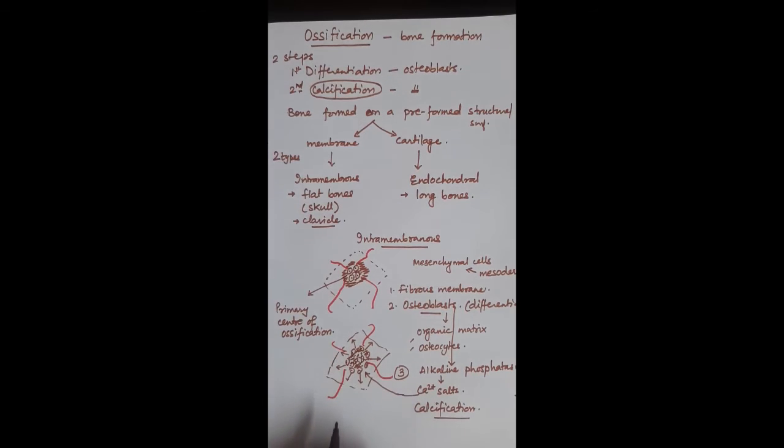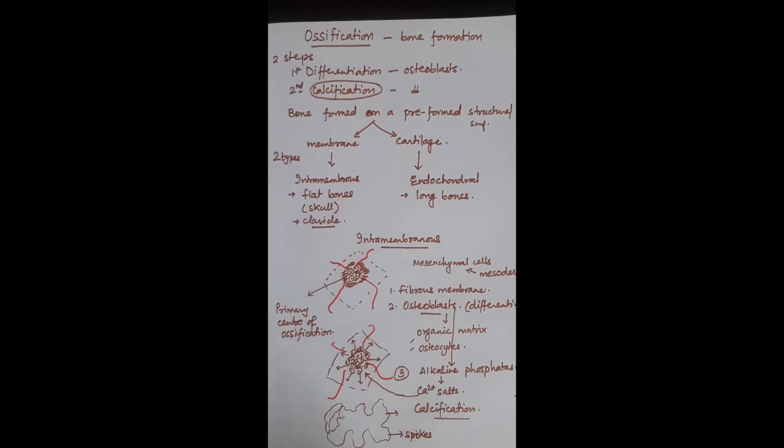Next what we get is an irregular shaped bone tissue. This bone tissue is formed and then these spoke-like extensions—they are like spokes of the wheel—these are called the spicules. Then this bone tissue starts joining with each other.